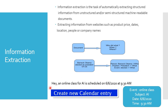Consider this email entry: 'An online class for AI is scheduled on 6-6-2020 at 9:30 am.' We are required to automatically construct a calendar entry with fields: event — online class; subject — AI; time — 9:30 am; and date — 6-6-2020.